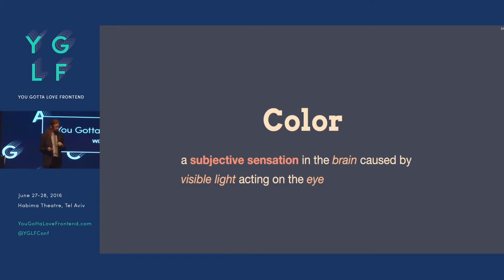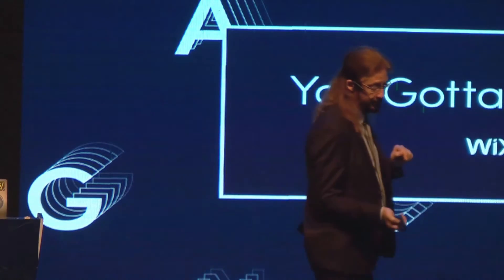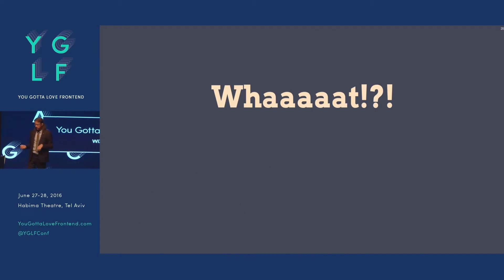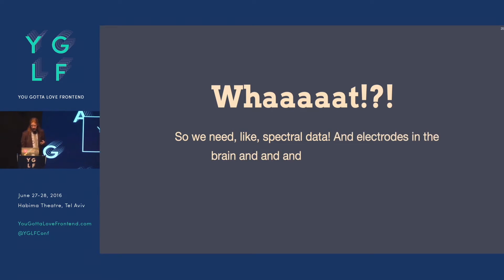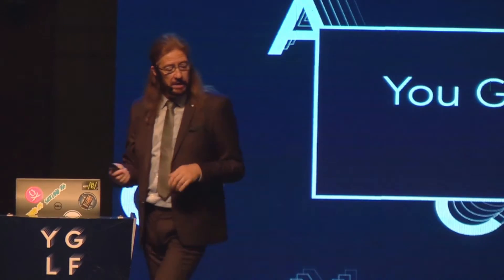So let's define color: it's a subjective sensation — not objective, not directly physically measurable in the brain — caused by visible light acting on the eye. That should make you scared. How are we going to define it? Because it's a nebulous subjective sensation. Maybe we need an entire spectrum all measured, and electrodes in the brain, and dissecting eyes. Actually, it turns out we don't need to do all that. There are a number of simplifying things which we can use. Science to the rescue.